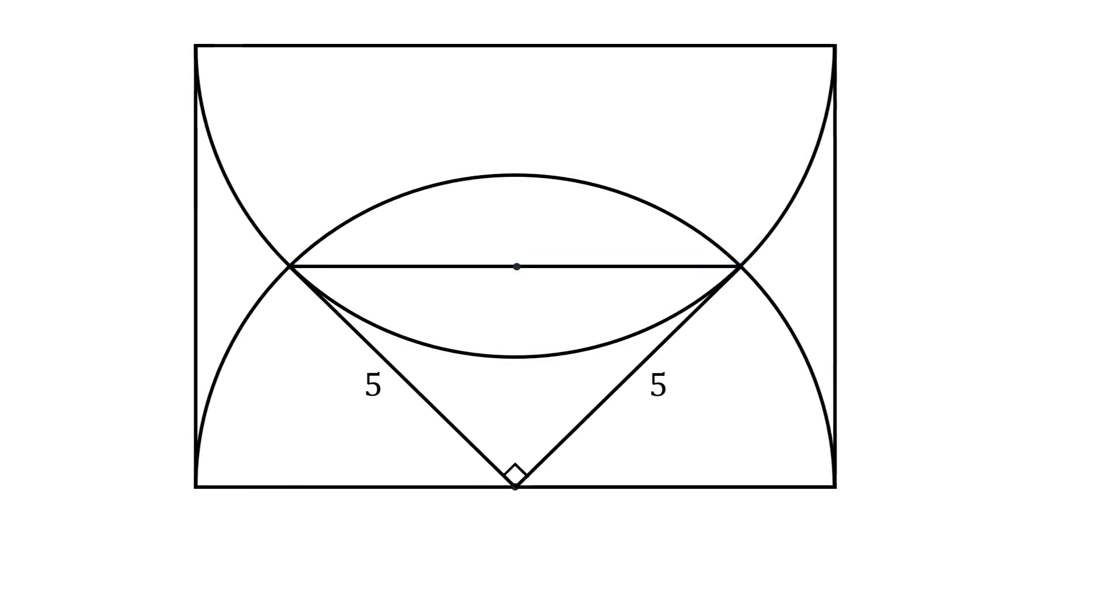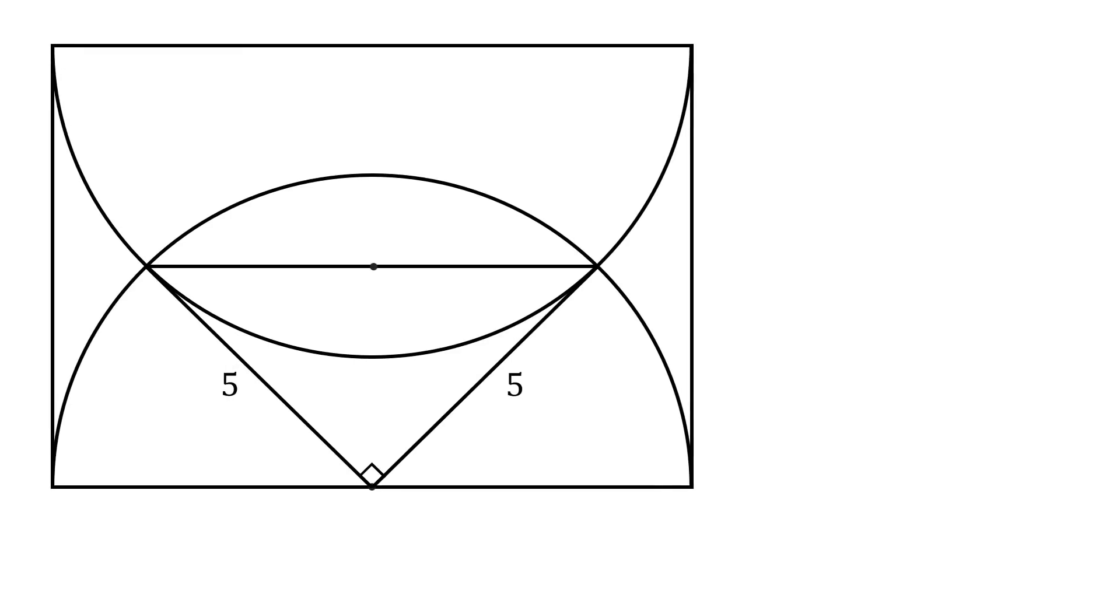We will now be able to calculate the required area. Notice this shape is a sector of the semicircle, and it has a central angle equal to 90 degrees. Thus, its area will be equal to one-quarter that of the entire circle. So its area will be equal to pi r squared all over 4, and here r is equal to 5. So you have pi multiplied by 5 squared all over 4.